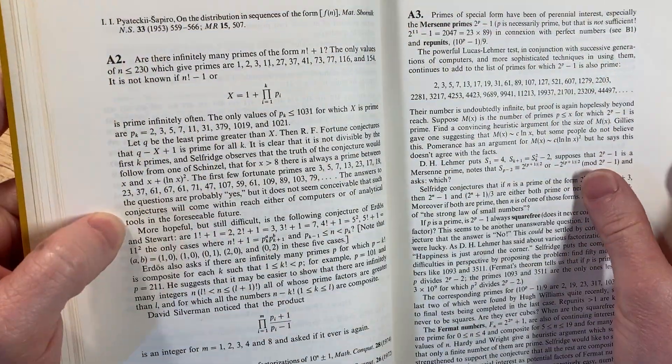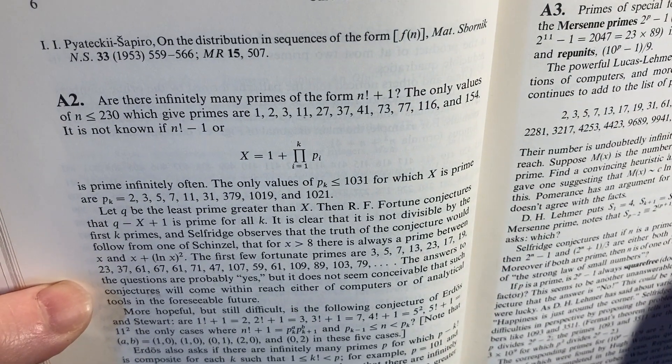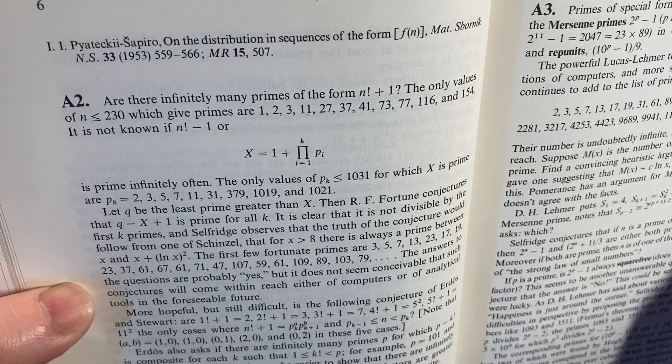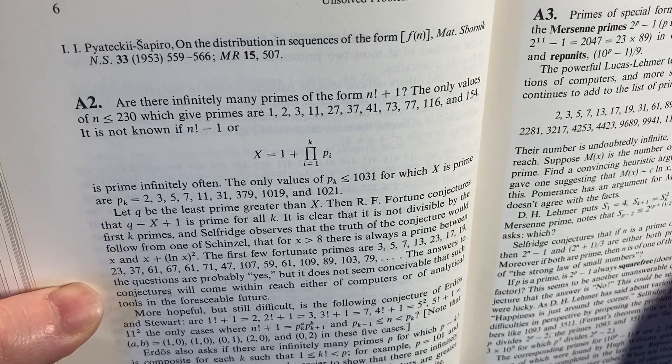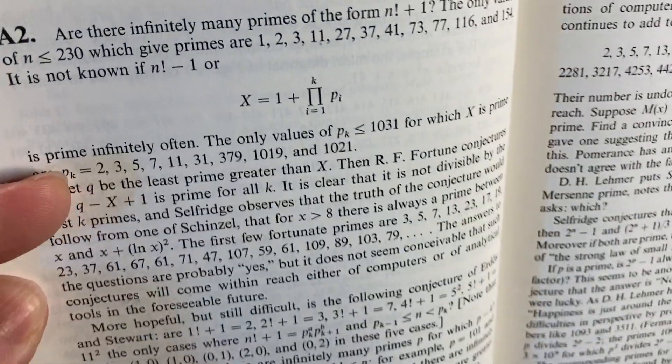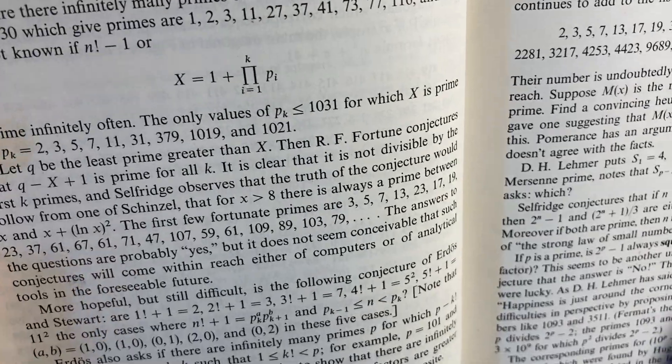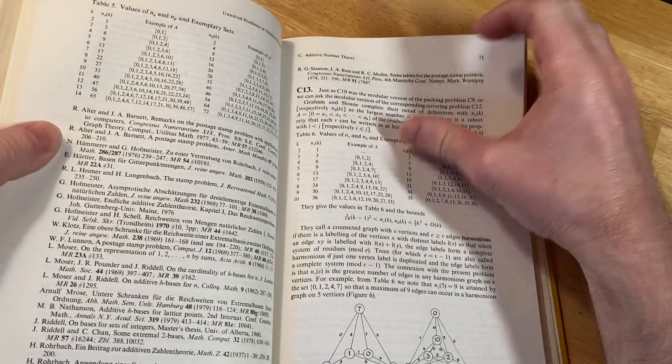Here's some problems. Are there infinitely many primes of the form n factorial plus 1? The only values of n less than or equal to 230 which give primes are... It is not known if n factorial minus 1 or x equals 1 plus that product is prime infinitely often. So these are unsolved problems. This is hard, hard mathematics. I just wanted to show you this book.